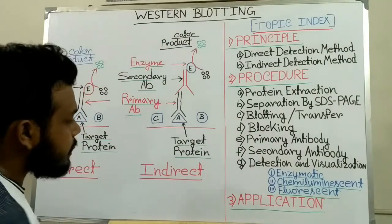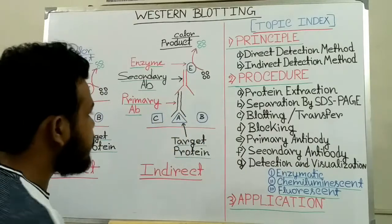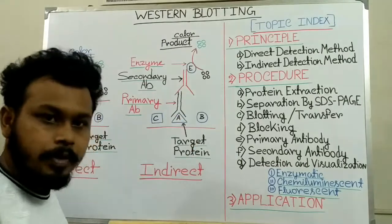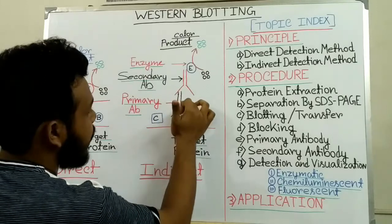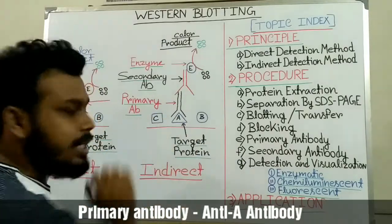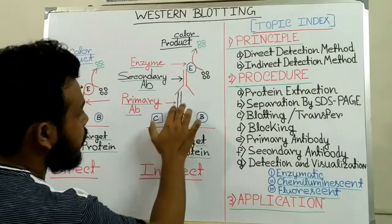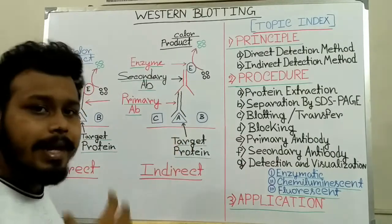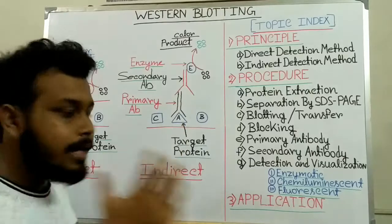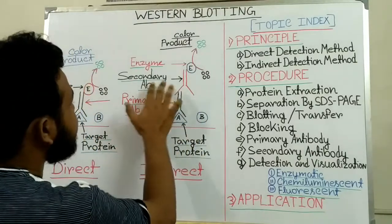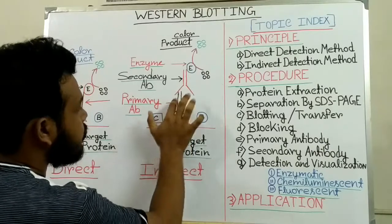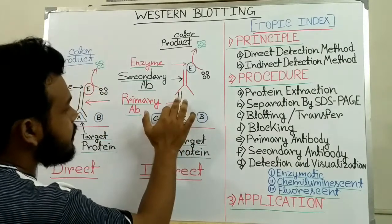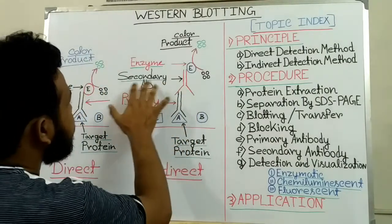In the indirect detection method, suppose three types of proteins are present and we raise an antibody against protein antigen A. This antibody is called the anti-A antibody, or primary antibody. When we add this primary antibody, it will specifically bind with protein A. Then we raise another antibody — called the secondary antibody — against the primary antibody. The secondary antibody specifically binds to the Fc region of the primary antibody.